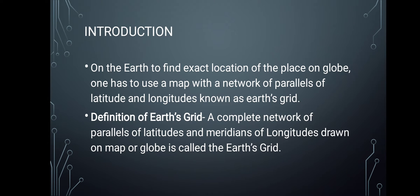On the earth, if we want to find any location on the globe or on the map, there are many parallel lines drawn — horizontal lines as well as vertical lines. These horizontal and vertical lines are imaginary lines; they are not actually drawn on the earth's surface. These parallel lines are known as latitudes and longitudes. The horizontal lines are known as latitudes, whereas the vertical lines are known as longitudes.